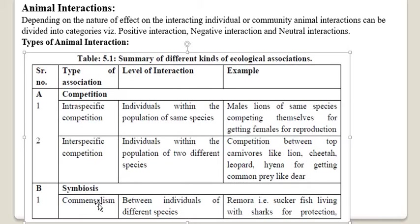Symbiosis is a kind of animal association in which one or both animals are benefited. Mutualism and commensalism are types of symbiotic association. Commensalism takes place between individuals of different species — for example, remora fish (sucker fish) living with sharks for protection. The remora fish is obviously at benefit because it gets protection from the shark and is also transported from one place to another when the shark migrates.